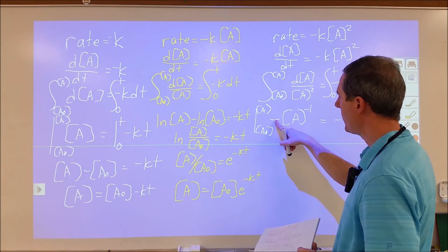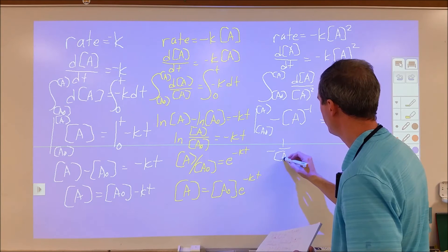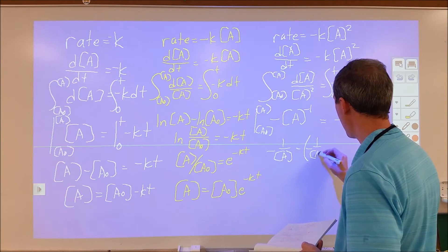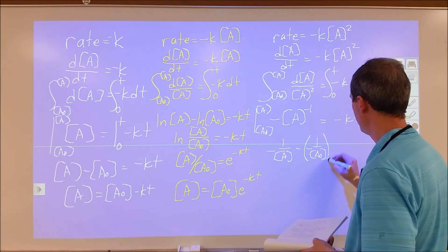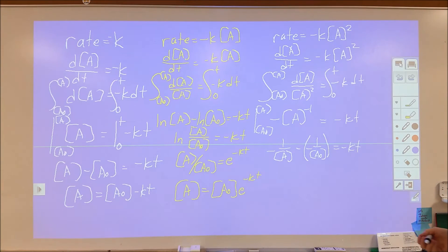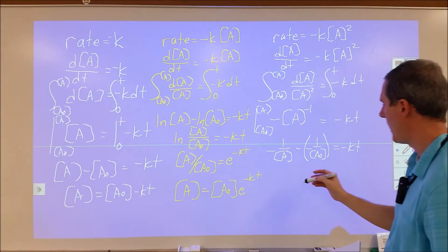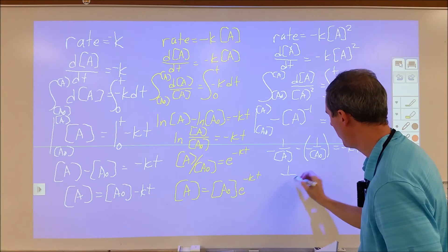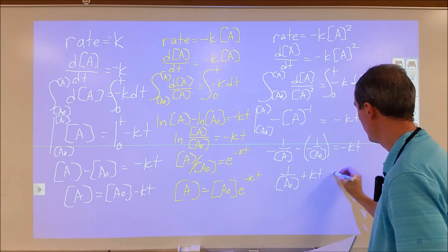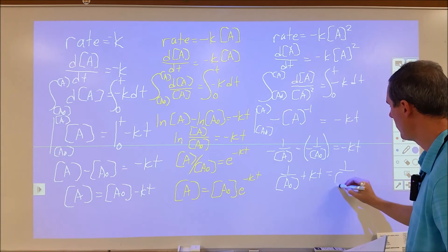This is a little tricky because we have 1 over A but it's negative. When we plug in the limits, we get negative 1 over A minus negative 1 over A₀ equals negative Kt. Rearranging, it's more convenient to write this as 1 over A equals 1 over A₀ plus Kt.